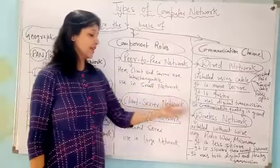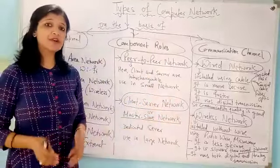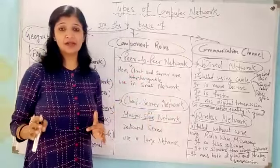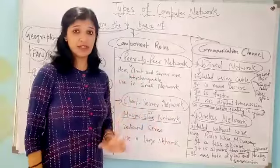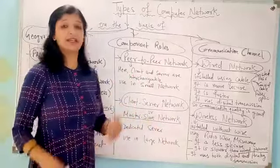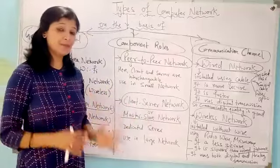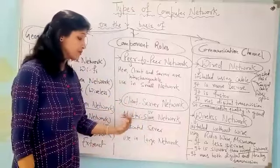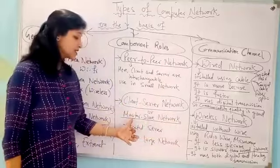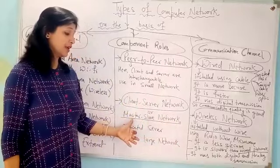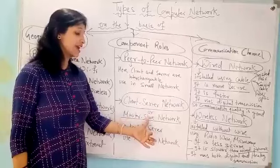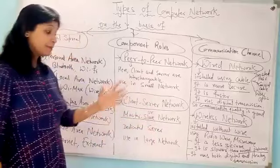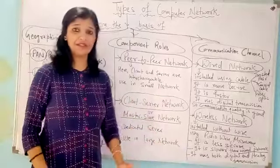Next is the client-server network. Client-server network is that type of network where the client and server are predefined, meaning there are some dedicated servers which provide server services only. For example, an email server is a mail server which only serves the client. It is also known as master-slave network, where the master is the component that gives the service and the slave is the component that takes the service. The server is dedicated, and client-server network is basically used in large area networks.